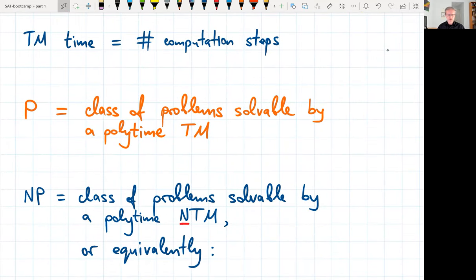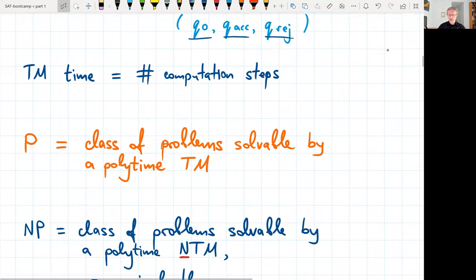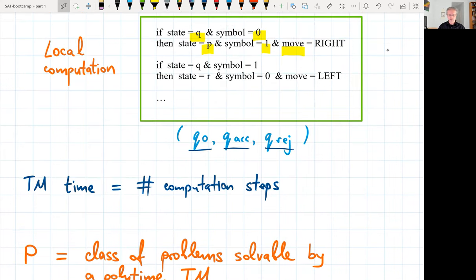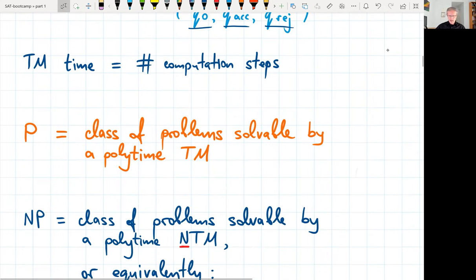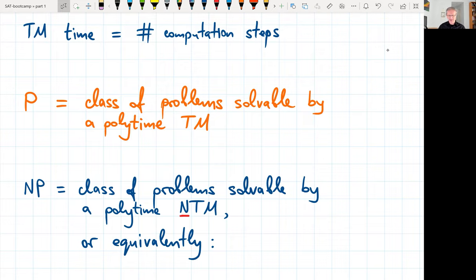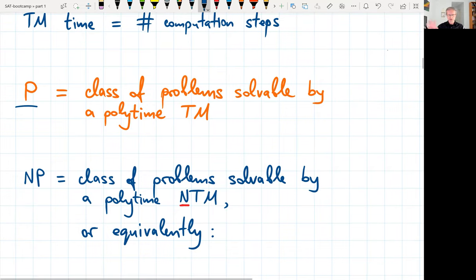The time complexity of the Turing machine is naturally defined as a number of computation steps, the number of transitions you make, the number of commands in this table of commands that Turing machine has that you need to take before you reach an accepting or rejecting state. We ignore the halting, non-halting issues. We assume that all the Turing machines will be timed so that they will always terminate. Now we can define a class P as a class of polynomial time solvable problems. Problems, yes, no decision problems solvable by polynomial time running deterministic Turing machine. So far, everything is deterministic.